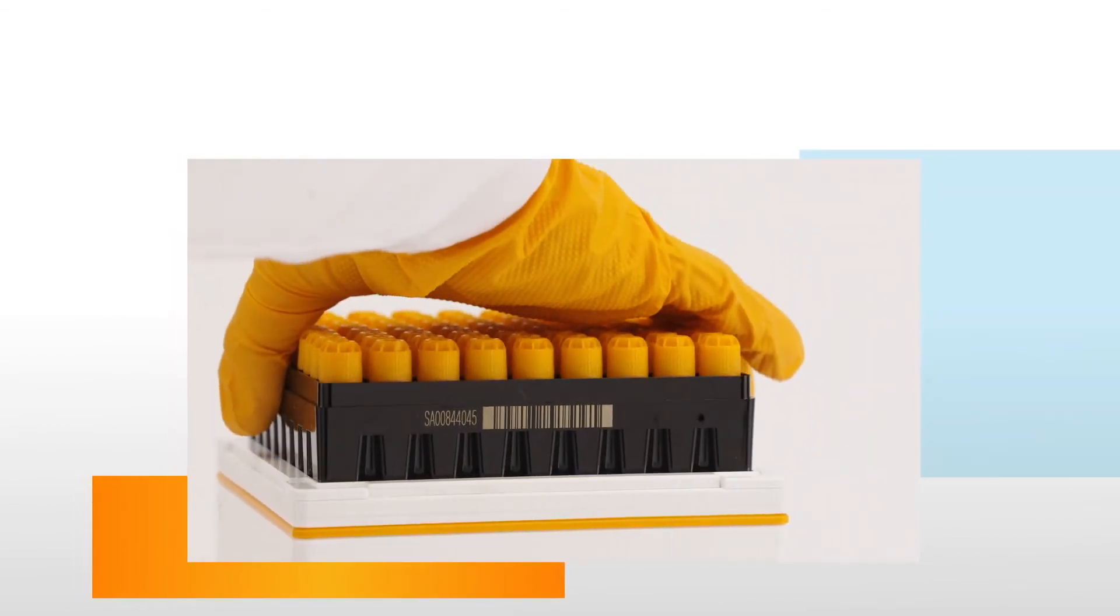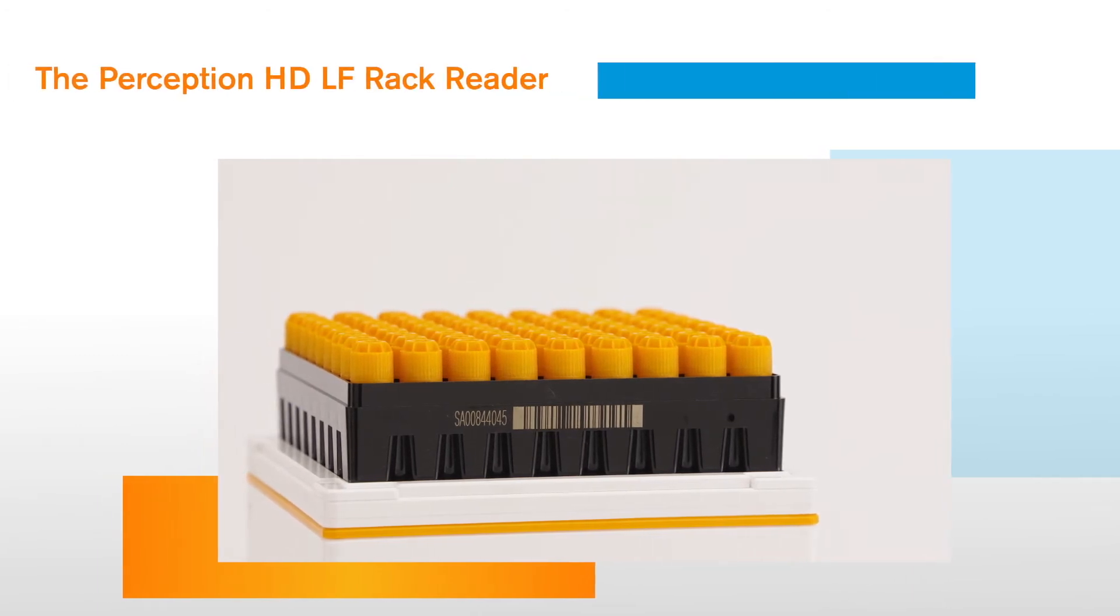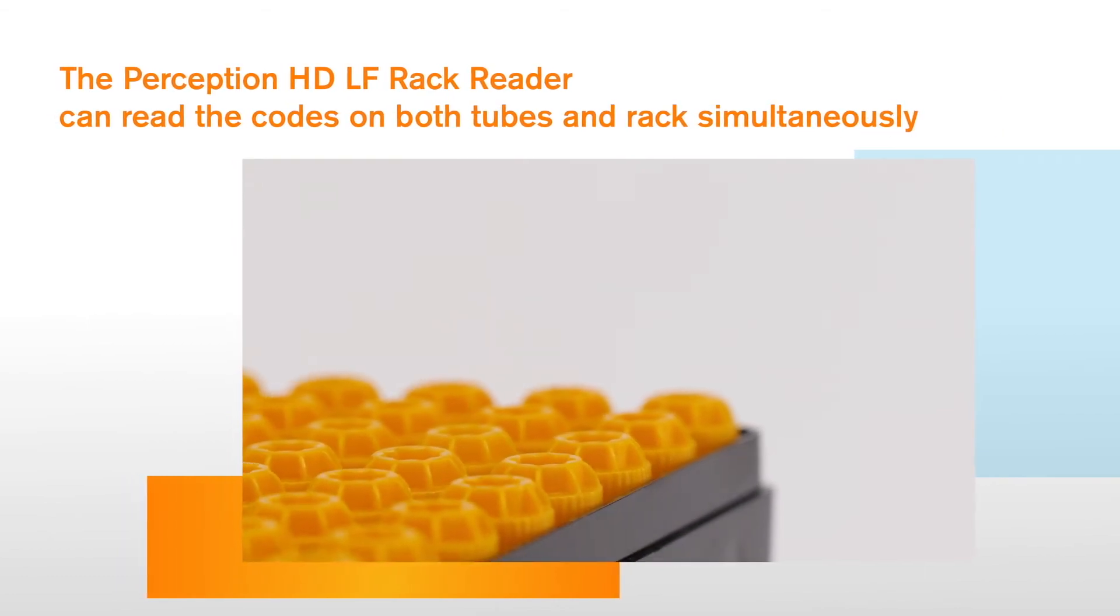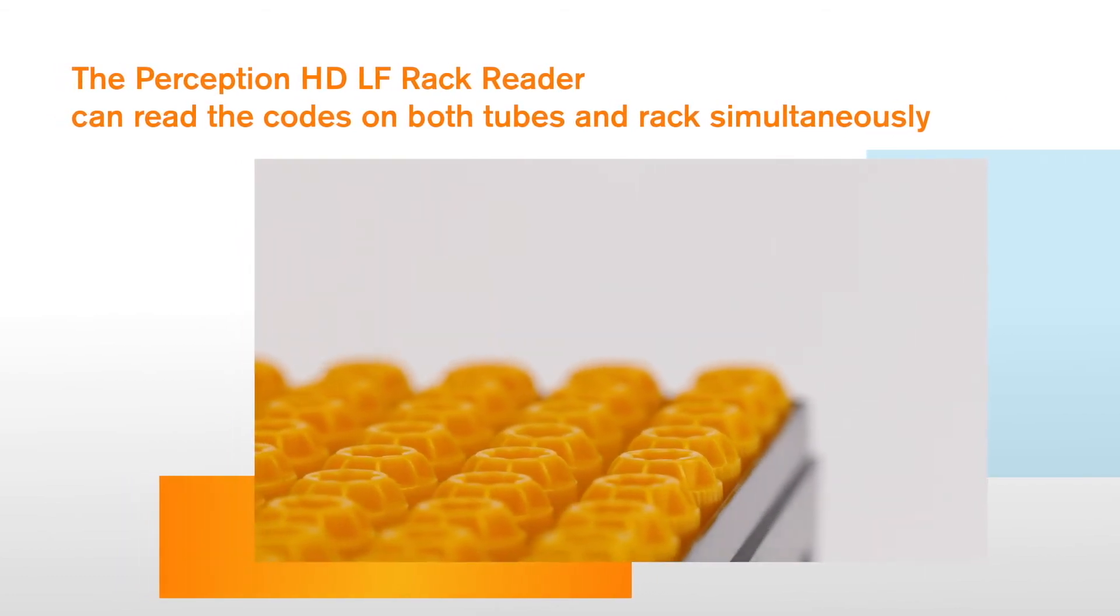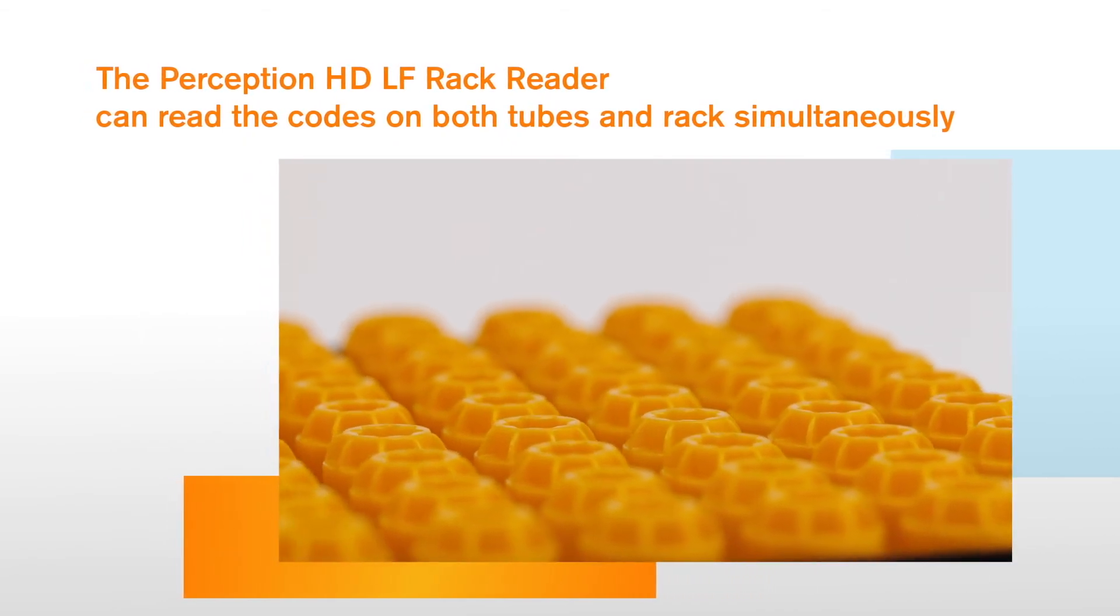Our FluidX storage tubes and racks can be supplied with a unique 2D code identifier or linear barcode. The Perception HDLF Rack Reader can read the codes on both tubes and racks simultaneously, delivering automatic rack orientation and increased sample security quickly and consistently.